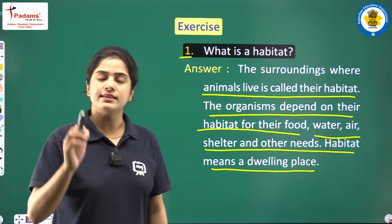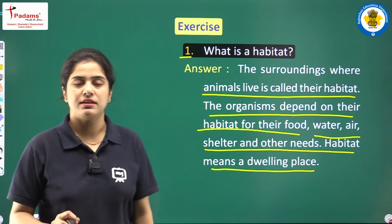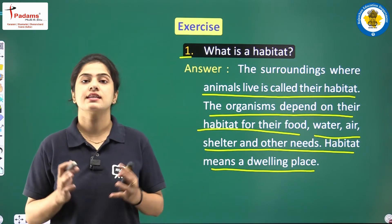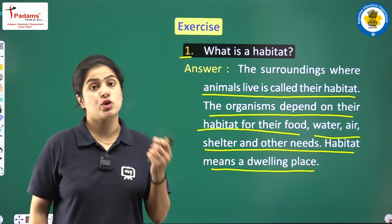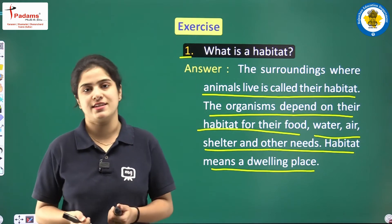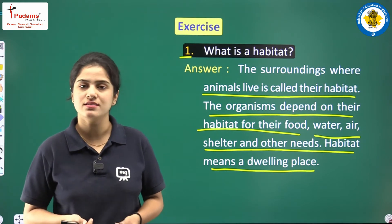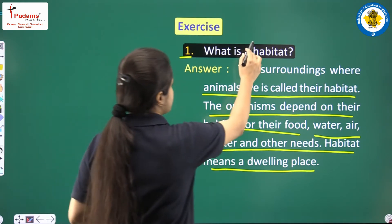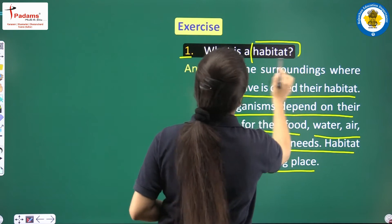On that particular habitat, an organism depends upon the basic necessities like shelter, air, water, soil, etc. This is what a habitat is all about.